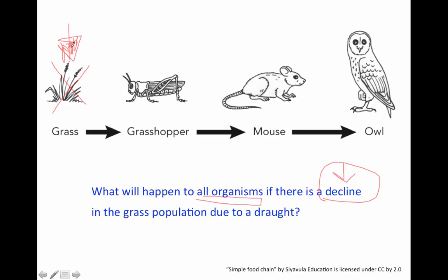So if the grass decreases, its predator, the grasshopper, won't have any food to eat, so it's going to decrease. Then its predator, the mouse, won't have anything to eat, so it's going to decrease. Which would then cause the owl to decrease as well because it won't have any food to eat. So essentially, if the producer is gone, it will mess up the whole entire food chain because everything won't have anything to eat. Go ahead and erase your whiteboard at this time.